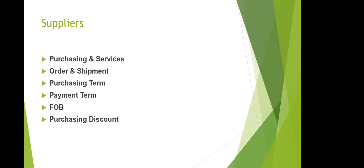For suppliers, you purchase services, goods, or assets. Your supplier ships the product to you and may create purchasing terms — for example, payment in 30 days or two months. Payment terms can also involve FOB (free on board) shipping point or FOB destination, which determines who pays transportation costs. If you pay early, the supplier may offer a discount.